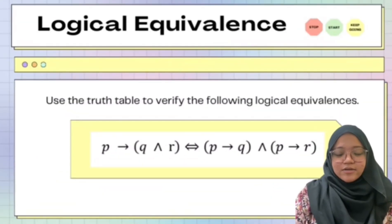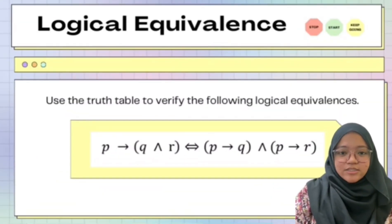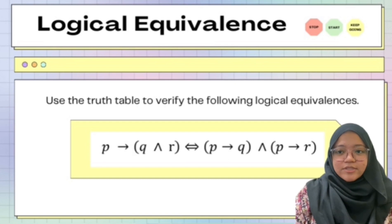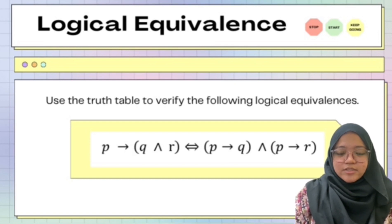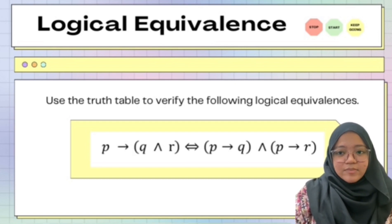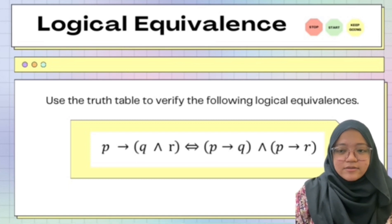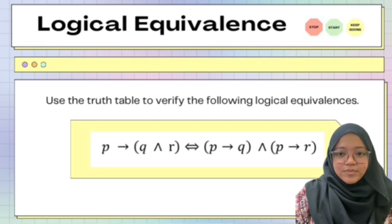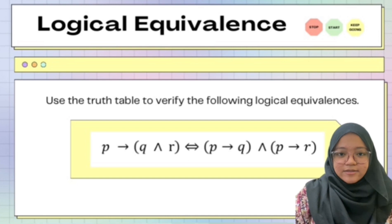Hi, I'm Putri Farahalya. We'll explain how to answer a logical equivalence question. The given question is to use the truth table to verify the following logical equivalence: P → (Q ∧ R) is equivalent to (P → Q) ∧ (P → R).